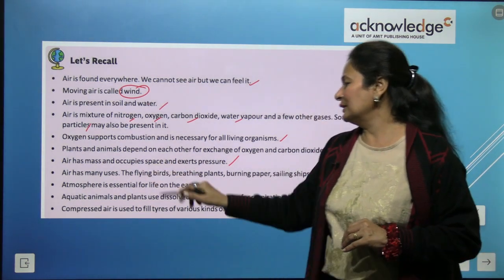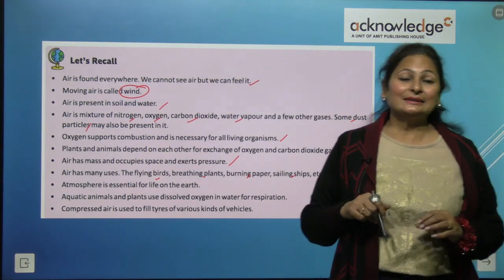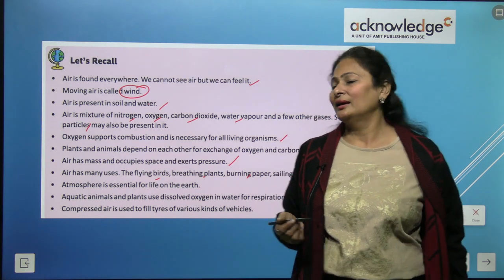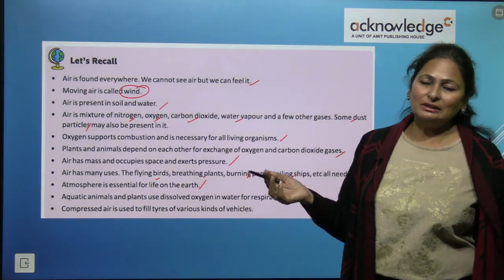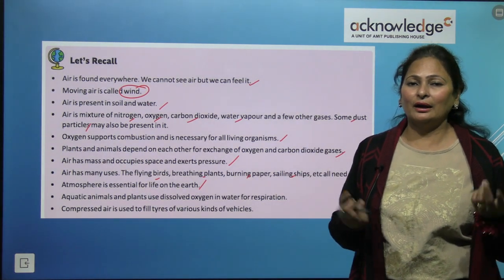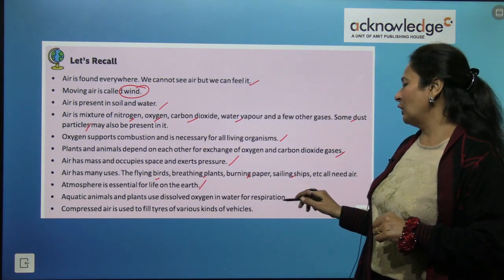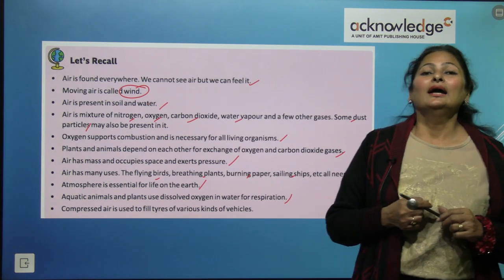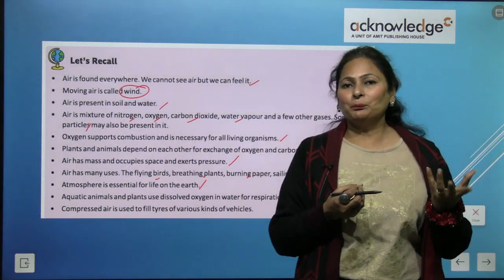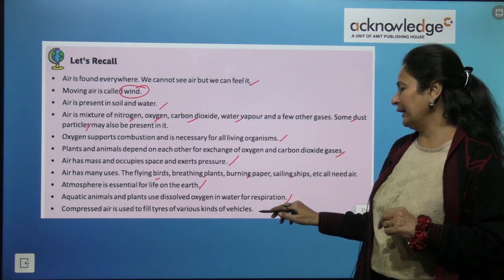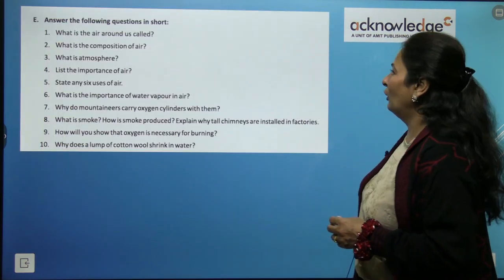Plants and animals depend on each other for exchanging oxygen and carbon dioxide — interdependence between plants, animals, and human beings. Air has mass, occupies space, and exerts pressure. Atmosphere is essential for life on Earth. Aquatic animals and plants use dissolved oxygen in water for respiration. Compressed air is used to fill tires.